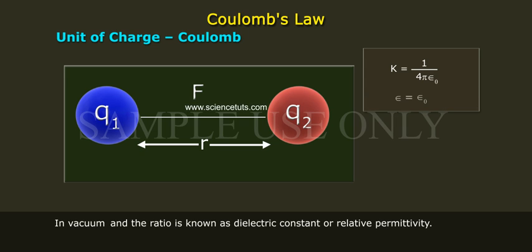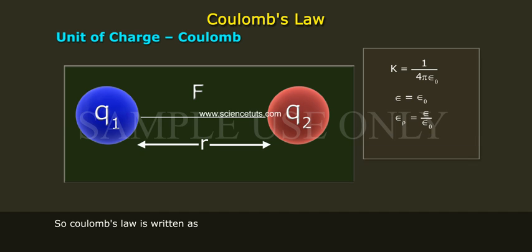In vacuum, epsilon is equal to epsilon naught, and the ratio epsilon r is equal to epsilon by epsilon naught is known as dielectric constant or relative permittivity. So Coulomb's Law is written as F is equal to 1 by 4π epsilon naught Q1 Q2 by r square.